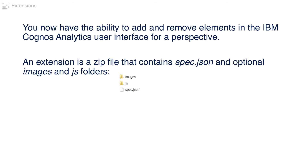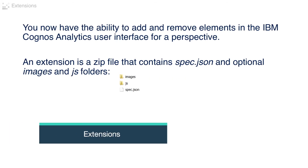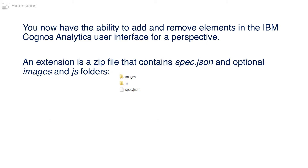You now have the ability to add or remove elements in the IBM Cognos Analytics user interface for a perspective. An extension is a zip file that contains spec.json and optional images and JavaScript folders.